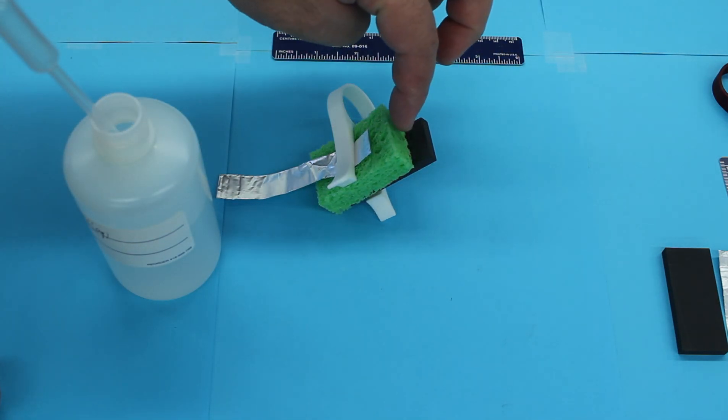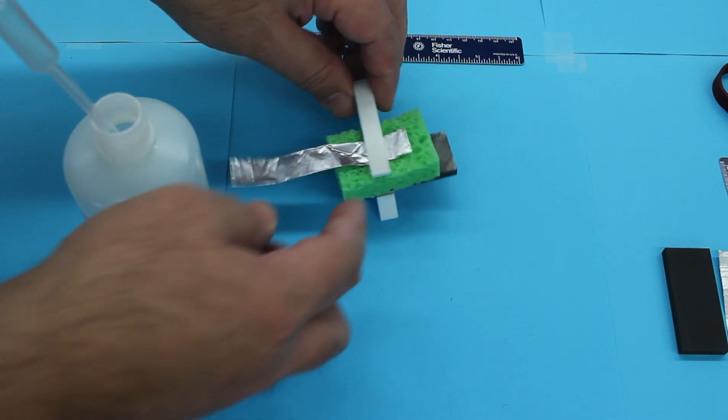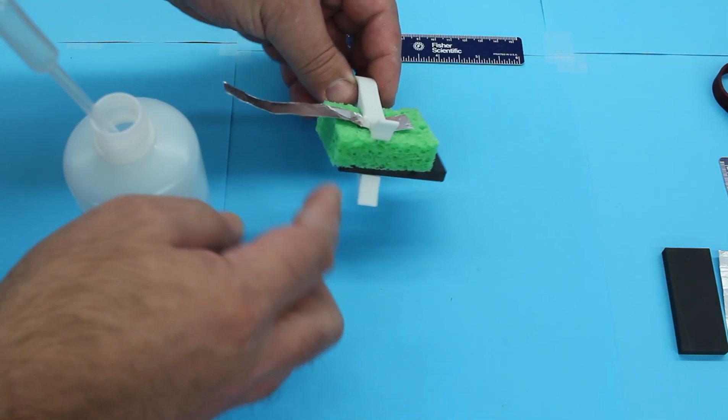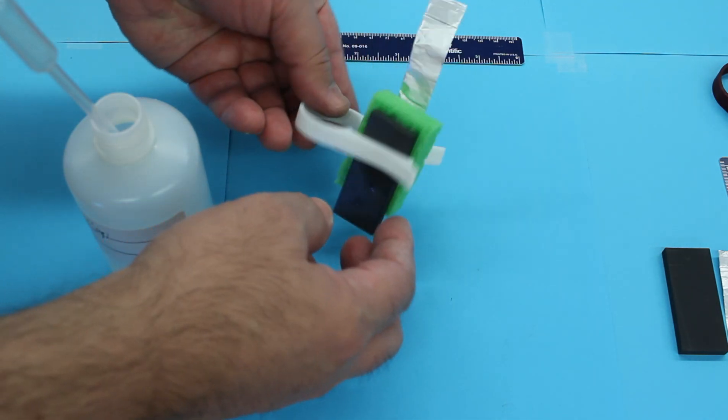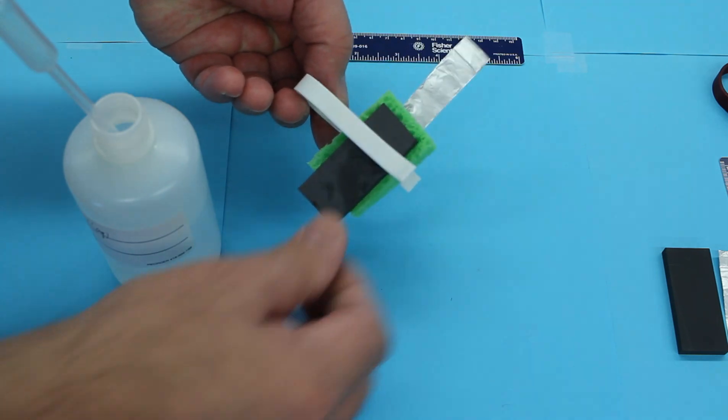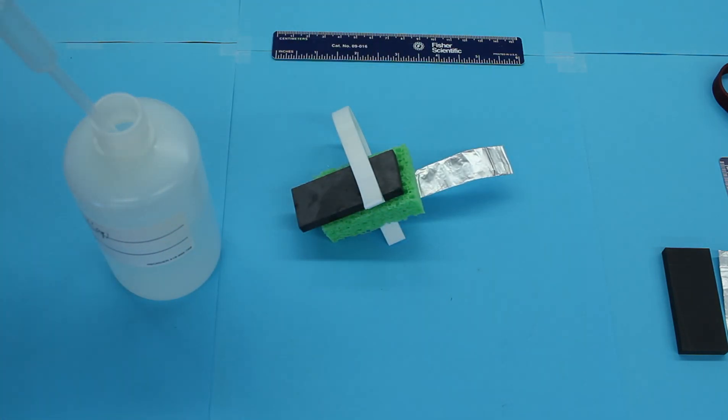And so now I have my first electrochemical cell. We have the anode, the aluminum. Our electrolyte media is the sponge. The sodium chloride is the electrolyte. And then we have our graphite over on the opposite side. And so now we can start testing voltage.